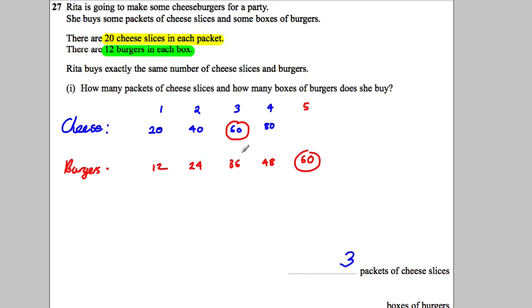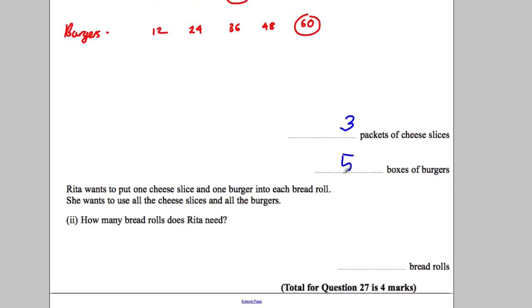Now it then says Rita wants to put one cheese slice and one burger into each roll. She wants to use all the cheese slices and all the burgers. How many bread rolls does Rita need?